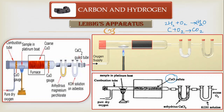In the combustion chamber you can use two gauges to help ensure proper conditions. You can use a copper oxide gauge and also a silver gauge. This gauge is basically used to prevent dust and dirt from entering the combustion chamber, because you are allowing oxygen to come in from here. The oxygen should be dry — it should not have moisture — and it should be pure, free of impurities. The copper oxide gauge placed at the start of the combustion chamber ensures pure and dry oxygen enters.